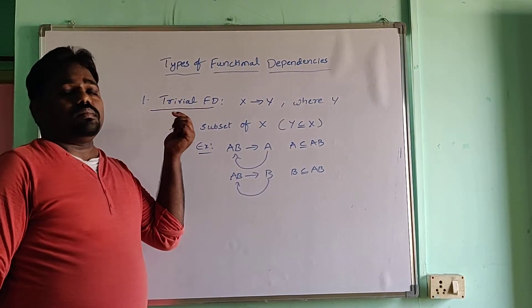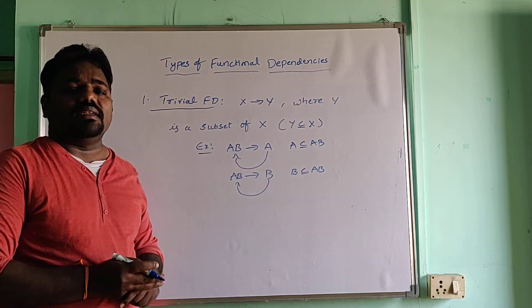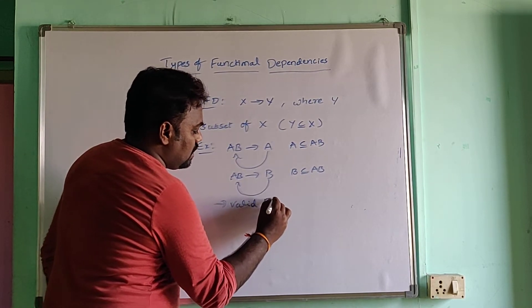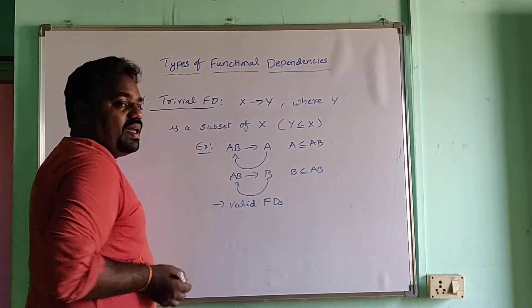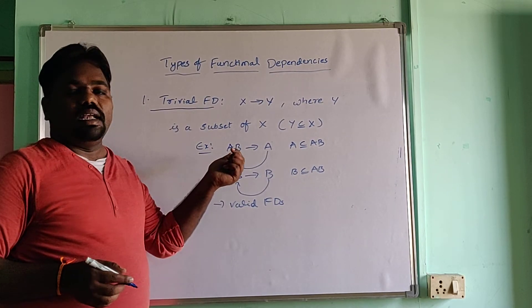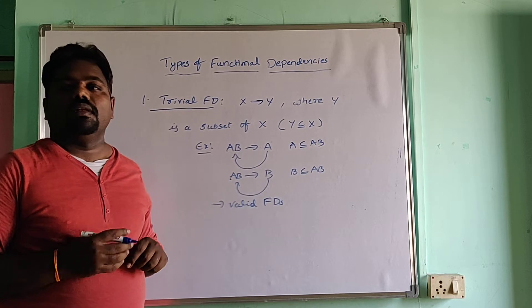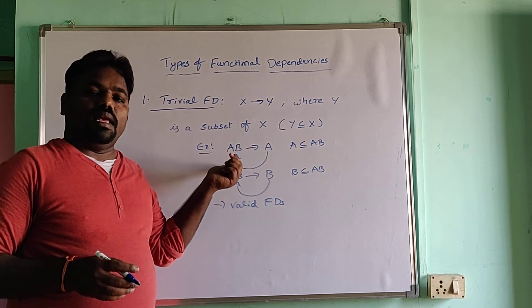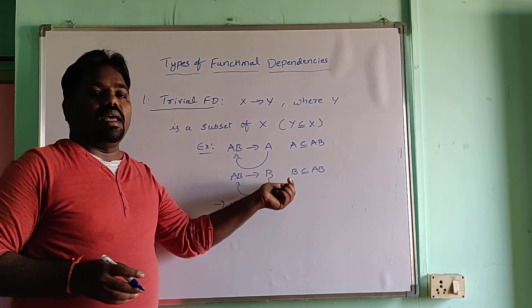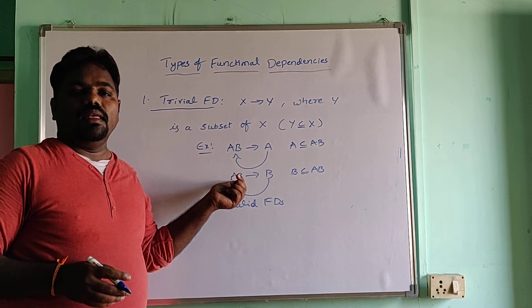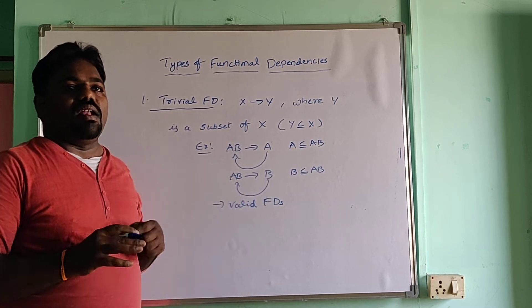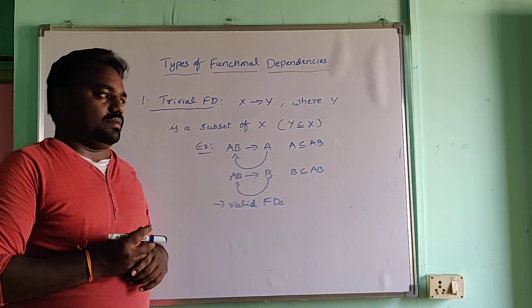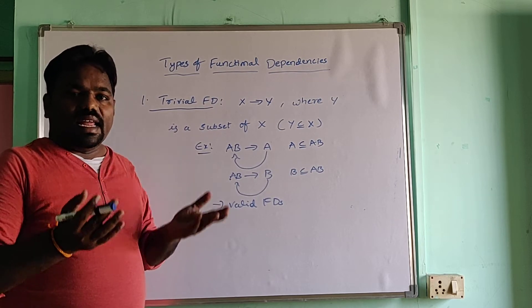Trivial functional dependencies are always valid functional dependencies, because we are not determining any new things. Always AB determines A, and A is also a part of AB. AB determines B, and B is also a part of AB. However, trivial functional dependencies are not useful in real time.